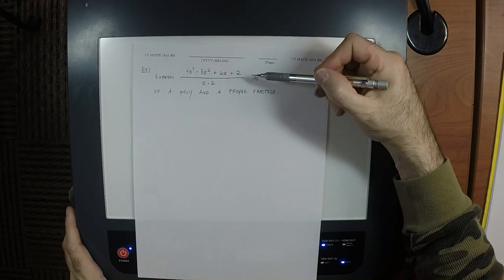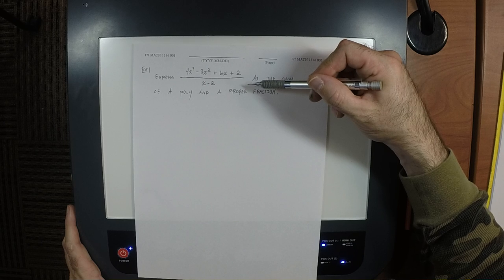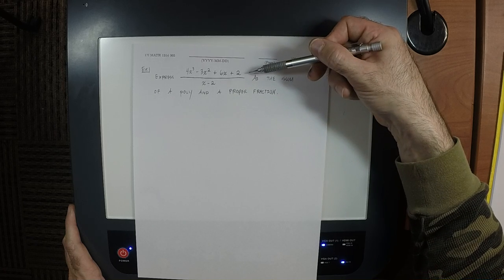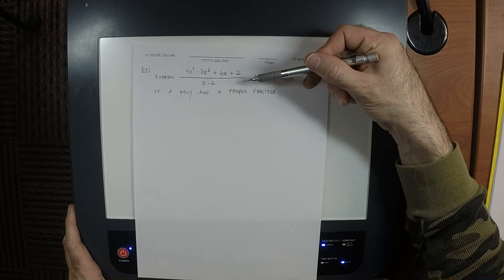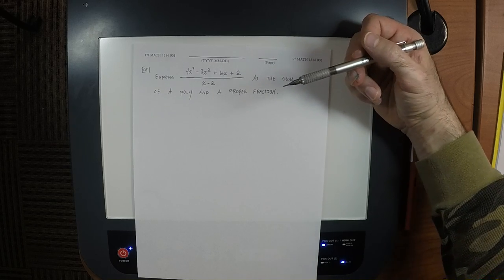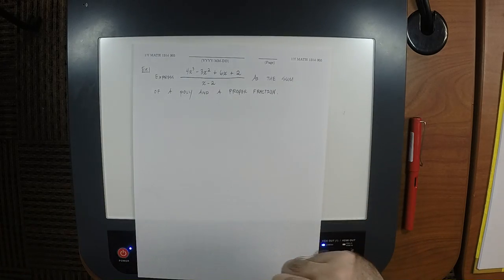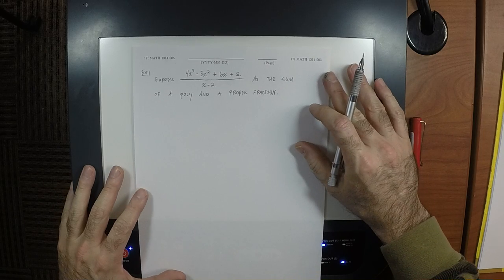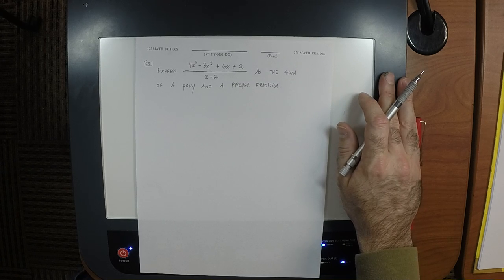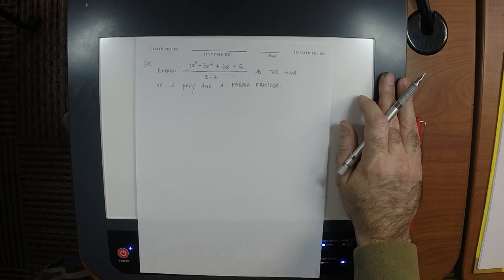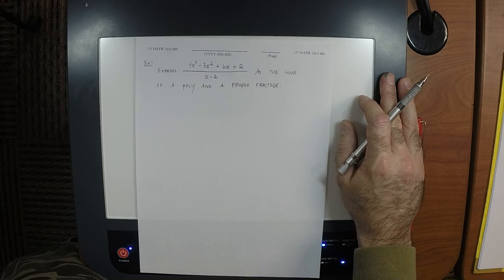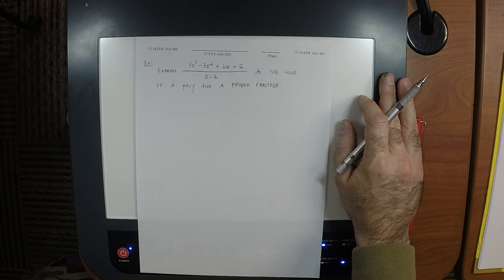Is this fraction already proper? It's not already proper, because the degree of the numerator is 3 and the denominator is 1. So if we could compute the quotient and the remainder of this division, we could answer the question. We know two styles of dividing polynomials: long division and synthetic division. Of the two, synthetic is far preferable in the sense that it takes far less work.